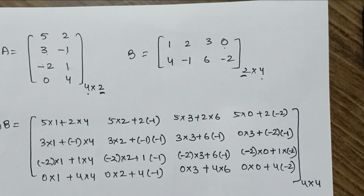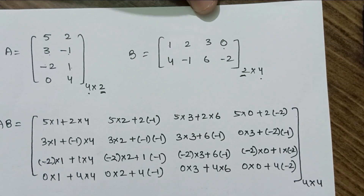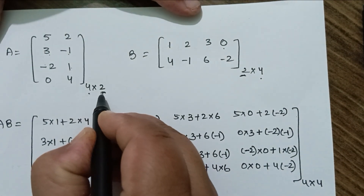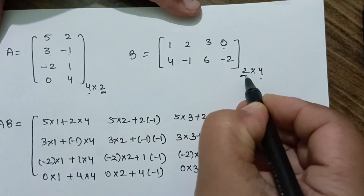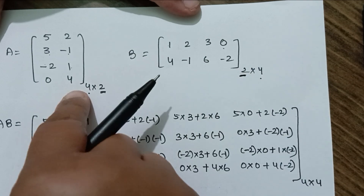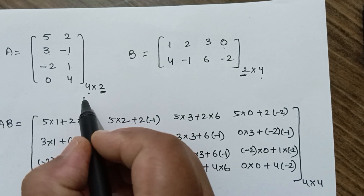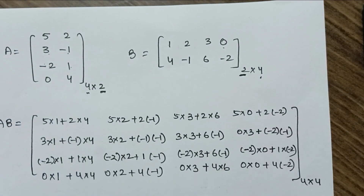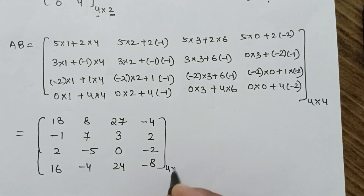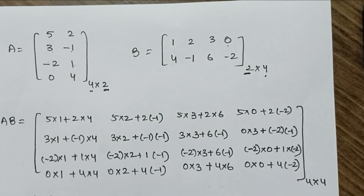To summarize: matrix A has order 4×2 and matrix B has order 2×4. Since the number of columns of A equals the number of rows of B, we can find the product AB. The resulting matrix AB has order 4×4. In this way, matrices of different orders are multiplied.